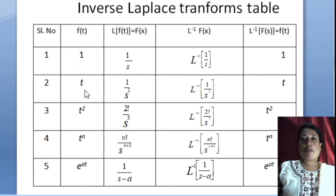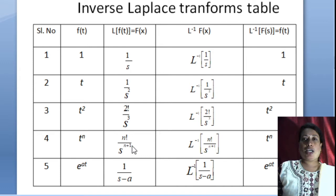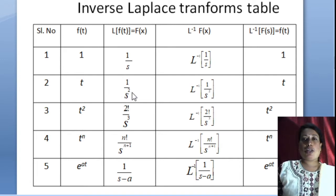Next, for example, Laplace of t. Here, L{tⁿ} = n! / s^(n+1). For t, the power is 1, so 1! = 1, divided by s^(1+1) = s². That means L{t} = 1/s², so L⁻¹{1/s²} = t.